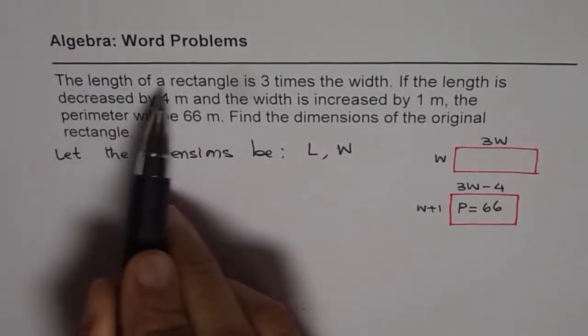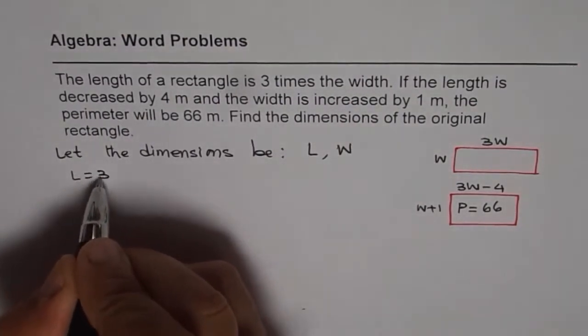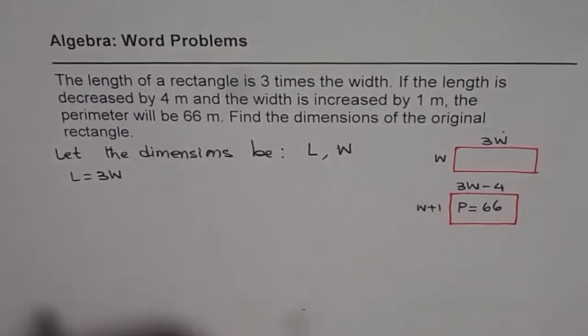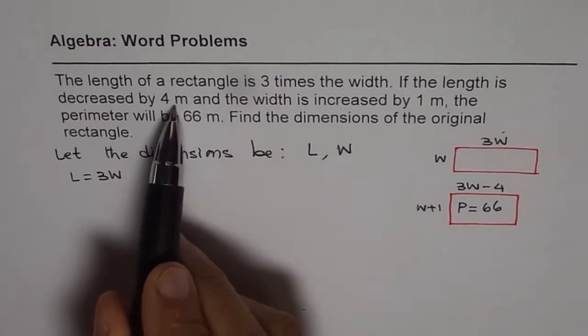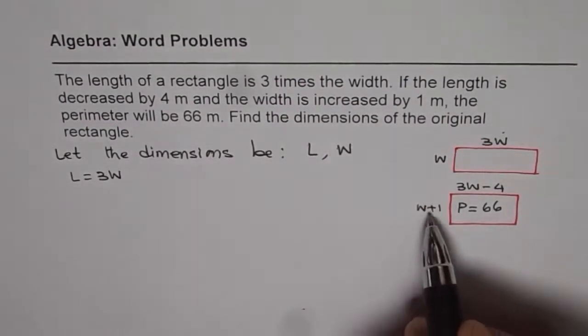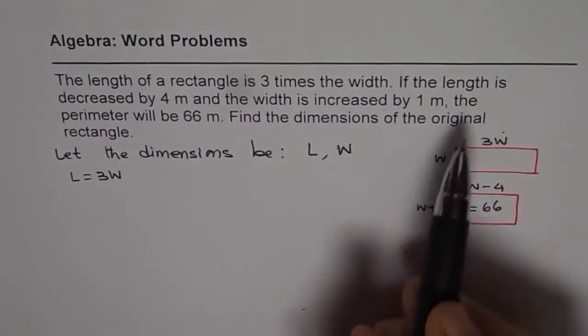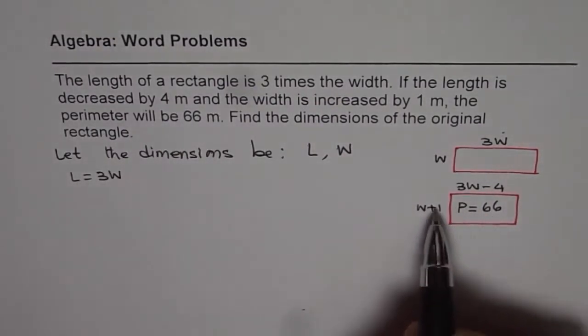Now it says length of a rectangle is three times width. That means length equals three times width, L = 3W. If the length is decreased by four meters and the width is increased by one meter, that is the scenario. The perimeter is 66, so we get an equation.